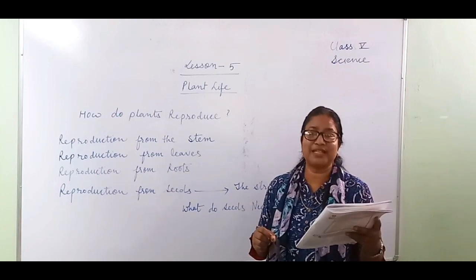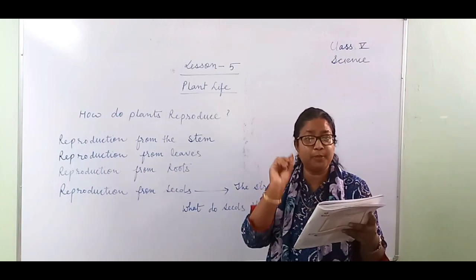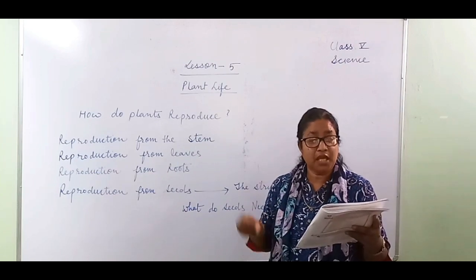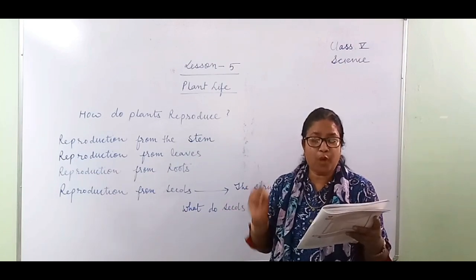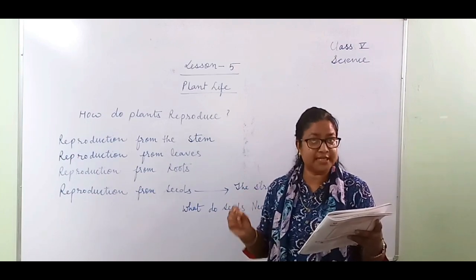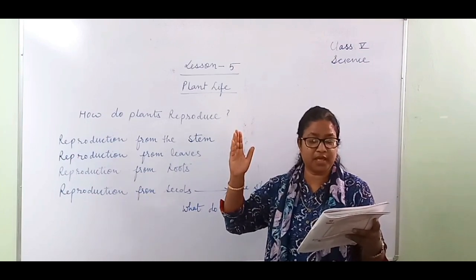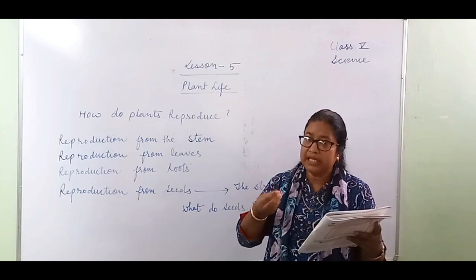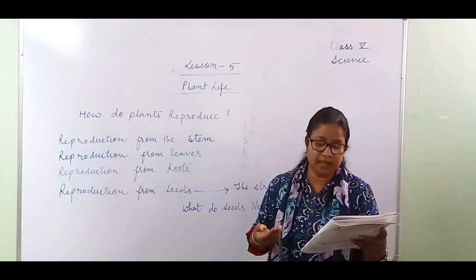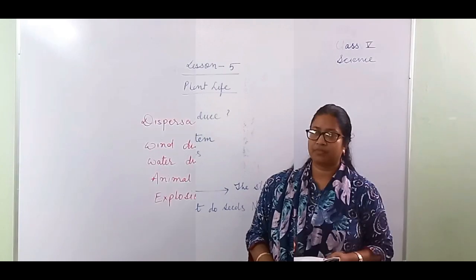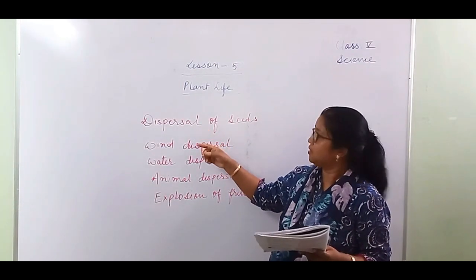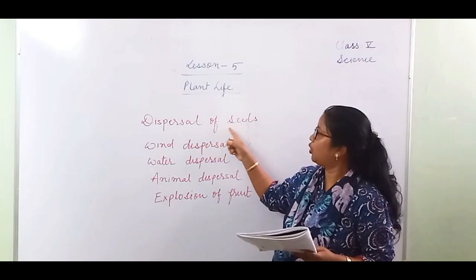The growth of a baby plant from a seed is called germination. The baby plant is known as a seedling. If seeds get proper water, proper air, and proper warmth or sunlight, they grow very easily and become healthy plants.